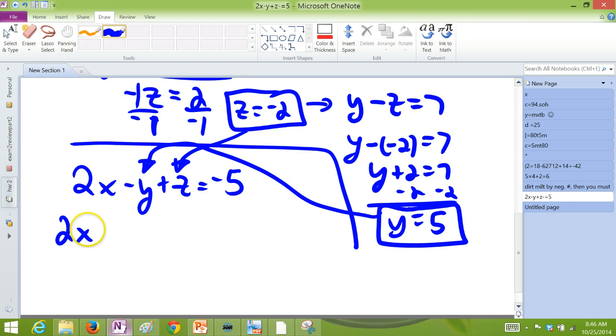I'm going to plug in the fact that z is negative 2 and the fact that y is positive 5. We'll get 2x minus 5 plus a negative 2 should be a negative 5. A negative 5 and a negative 2 is a negative 7.